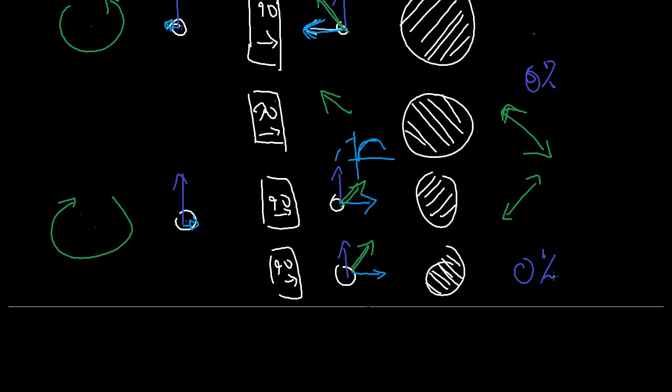So maybe already you can start to see how we can use these as 3D glasses. Because if we send right circular polarized light through both of these lenses, this guy gets the light. If we send left, so that's the right circular. If we send left circular, it goes through the other one.